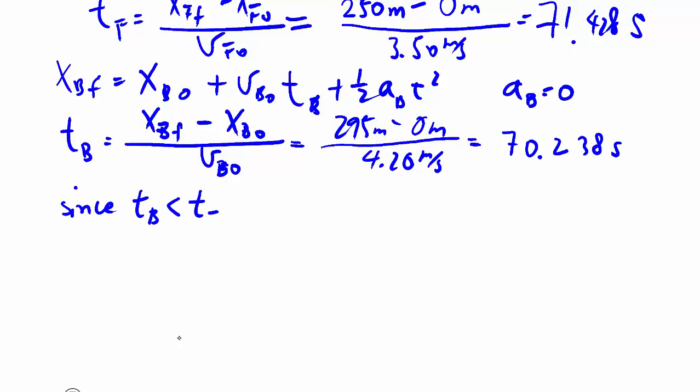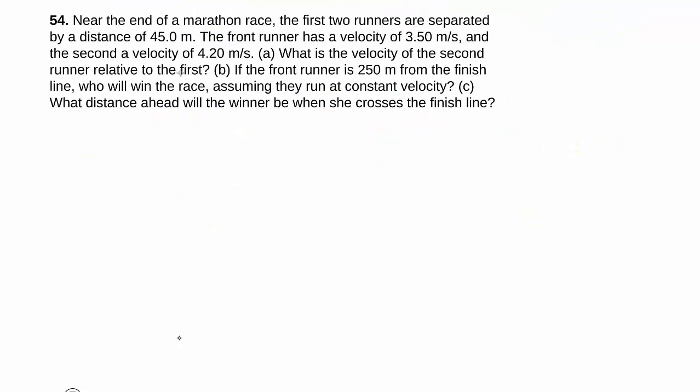Since tb is less than tf, the back runner wins because he takes shorter time to get there. Going to part C now, let's see the question again because it's a long question. What distance ahead will the winner be when she crosses the finish line? So it's a completely different situation.